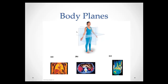Coronal or frontal means the cut results in a front and back portion. This plane divides the body into a front half and a back half. The terms coronal and frontal mean the same thing — you can use either one. Transverse means you're dividing a part into top and bottom halves. For example, pickles on a cheeseburger are transverse cuts, and a banana split would be a sagittal cut.